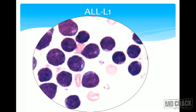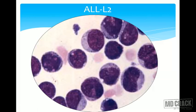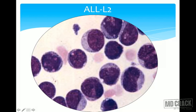L1 is the very classical type — classical blasts with thrombocytopenia. L2 mimics AML: the amount of cytoplasm is slightly larger, moderate in amount, and can be confused for myeloblast. This is really challenging for the pathologist, and we invariably use immunohistochemistry and cytochemistry markers to differentiate ALL L2 from AML.